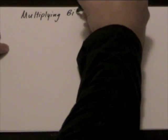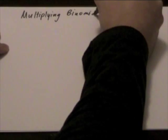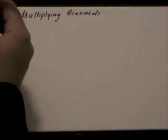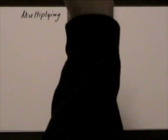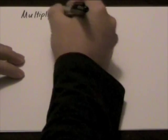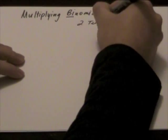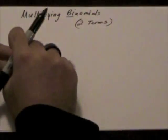Multiplying binomials. Whenever we're multiplying binomials, we usually form a trinomial, depending on the type of terms that we've created. In terms of multiplying binomials, binomials means two terms.